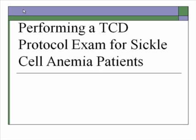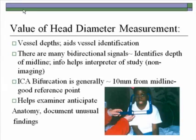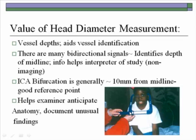The head diameter must be measured before the study. It helps determine vessel depths and aids in vessel identification. There are many bidirectional signals intracranially, so the head diameter helps identify the depth of the midline and helps both the examiner and interpreter decide which bifurcation corresponds to which vessel. The ICA bifurcation is generally 10 millimeters from the midline, so it is a good reference point. When you get lost during the study, always go back to the bifurcation to get grounded and figure out where you are.